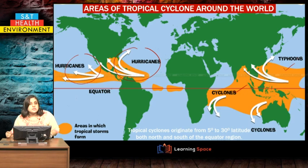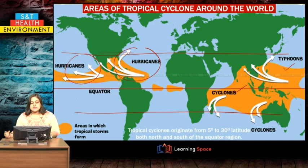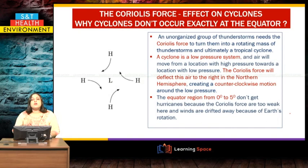Tropical cyclones are generally found between 5 to 30 degrees latitude both in the north and the south. However, they are not usually found in the equatorial region of 0 to 5 degrees north and south. To understand why, we need to look at the concept called the Coriolis effect.